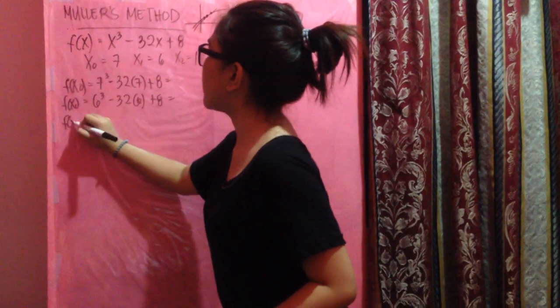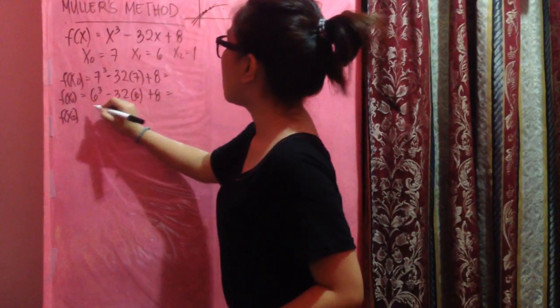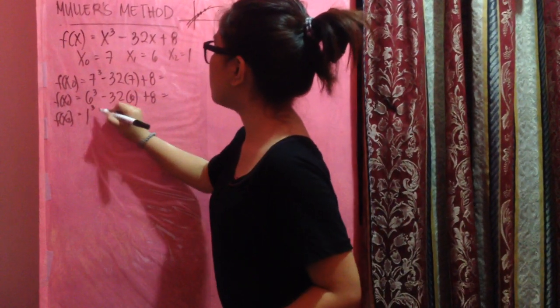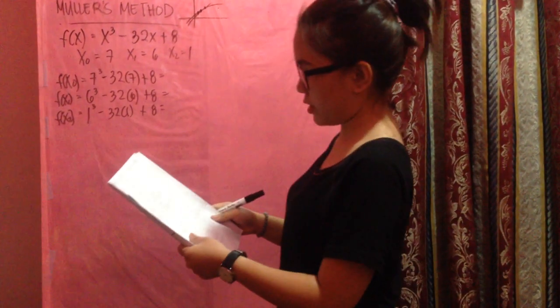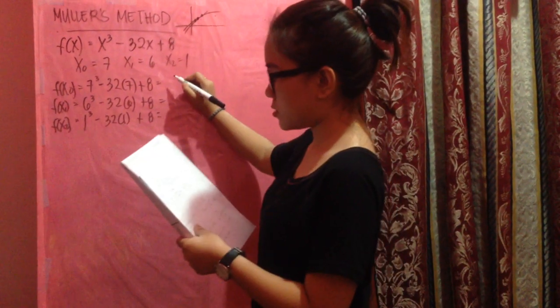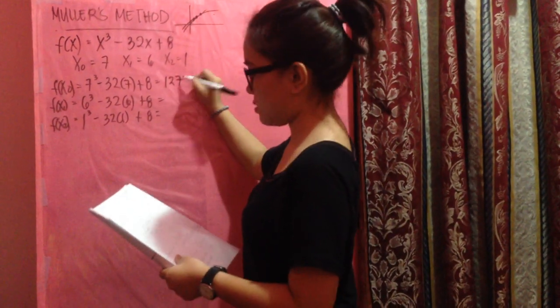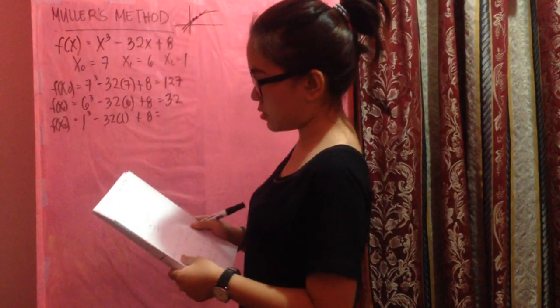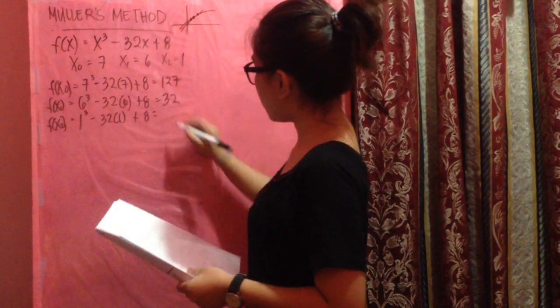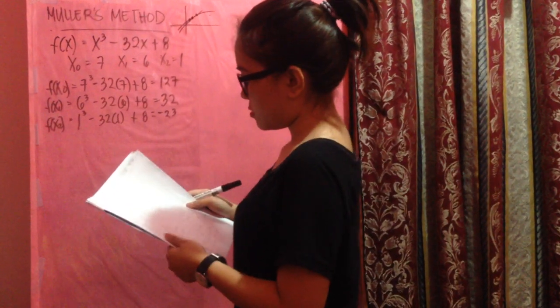And for the f(x₂), substitute 1: 1 cubed minus 32 times 1 plus 8. So, for the f(x₀), we have 127, f(x₁) we have 32, and for the f(x₂), we have negative 23.